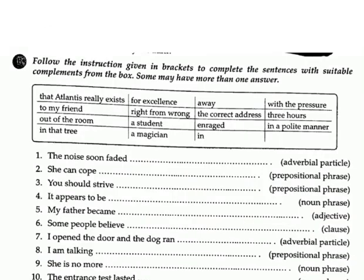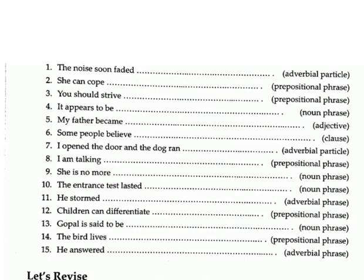Exercise F: Follow the instruction given in brackets to complete the sentences with suitable complements from the box. Options: that Atlantis really exists, for excellence, away, with the pressure, to my friend, right from wrong, the correct address, 3 hours, out of the room, a student, enraged, in a polite manner, in that tree, a magician, in. 1. The noise soon faded ___. (adverbial particle) Answer: away.